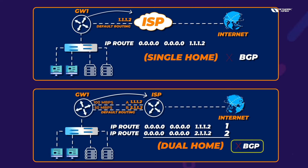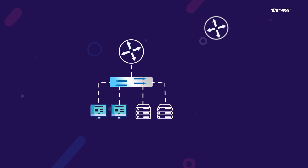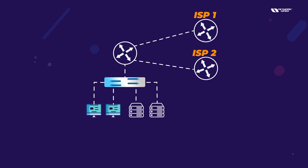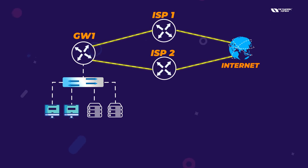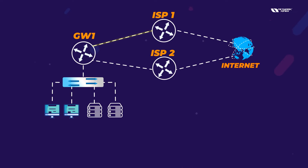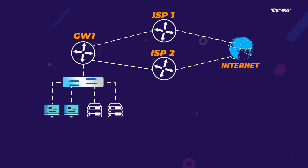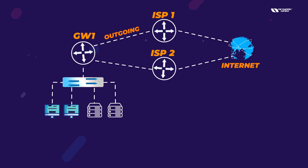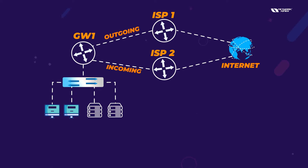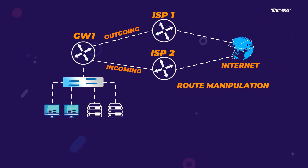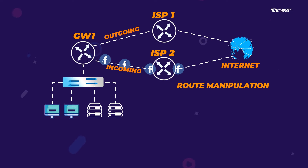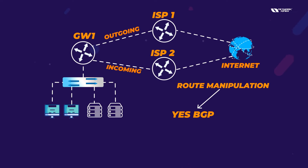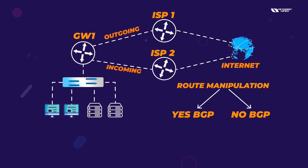Now consider a different design: your gateway has two internet connections — ISP1 and ISP2 — both connected to the internet. You could use a default route, but the key question is: do you want to manipulate traffic? Do you want outgoing traffic from one link and incoming from the other? Do you want Google traffic via ISP1 and Facebook traffic via ISP2? If yes, then BGP is required. If no route manipulation is needed, BGP is not required.